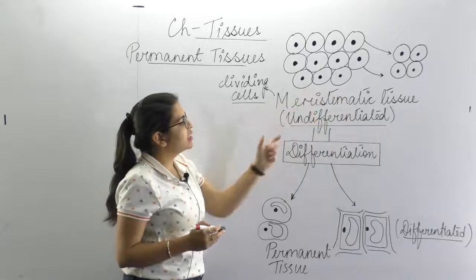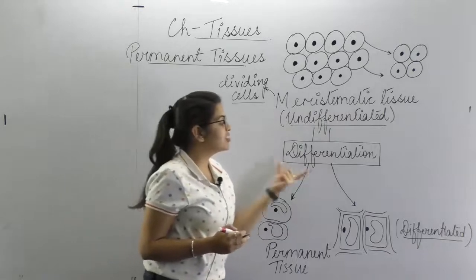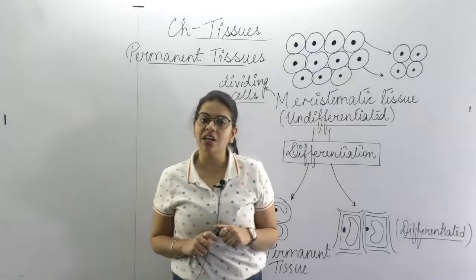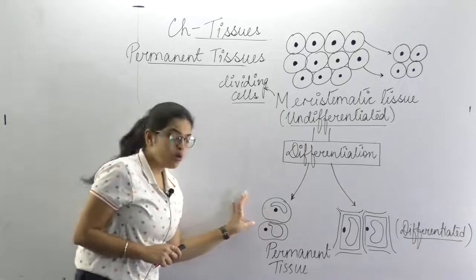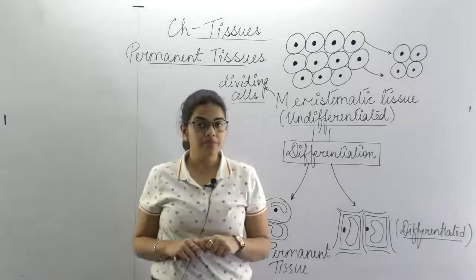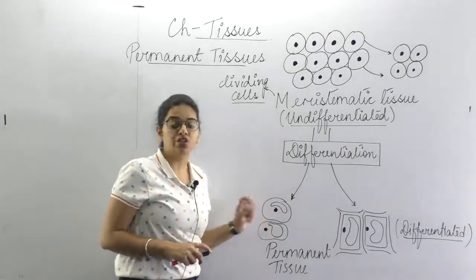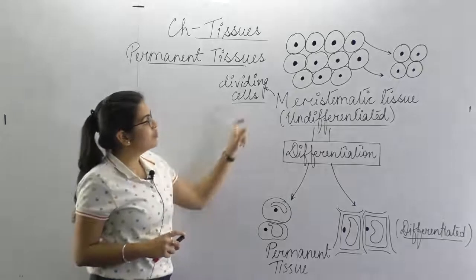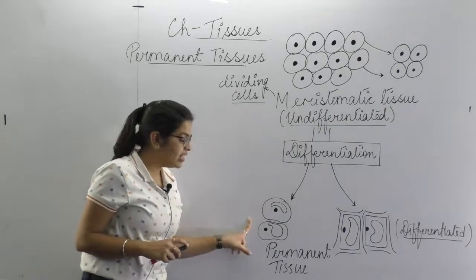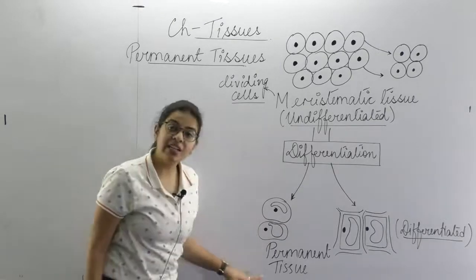But some cells formed from meristematic tissues will undergo a process called differentiation. Differentiation means they will get specialized — they will have a fixed shape, a fixed form, and a fixed function. More importantly, they will stop dividing and lose the ability to divide. Those cells which are formed from meristematic tissues, get differentiated, attain new shape and structure, and perform fixed functions are called permanent tissues.